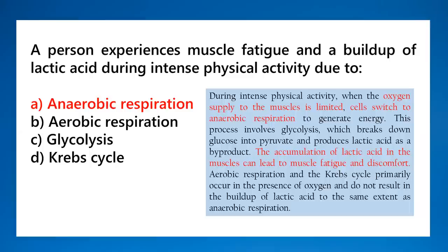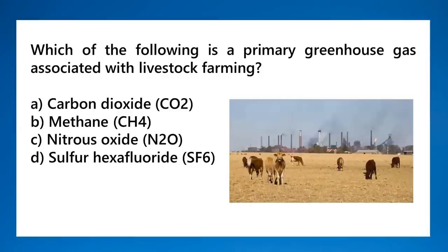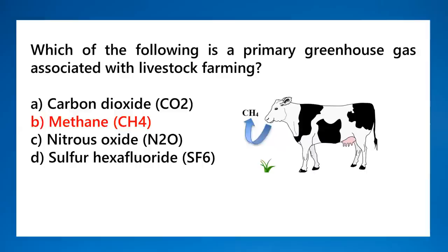Which gas is a primary greenhouse gas associated with livestock farming? That is methane. Methane is released especially by cows and is a much more harmful greenhouse gas than carbon dioxide. Methane is what we associate with livestock farming.